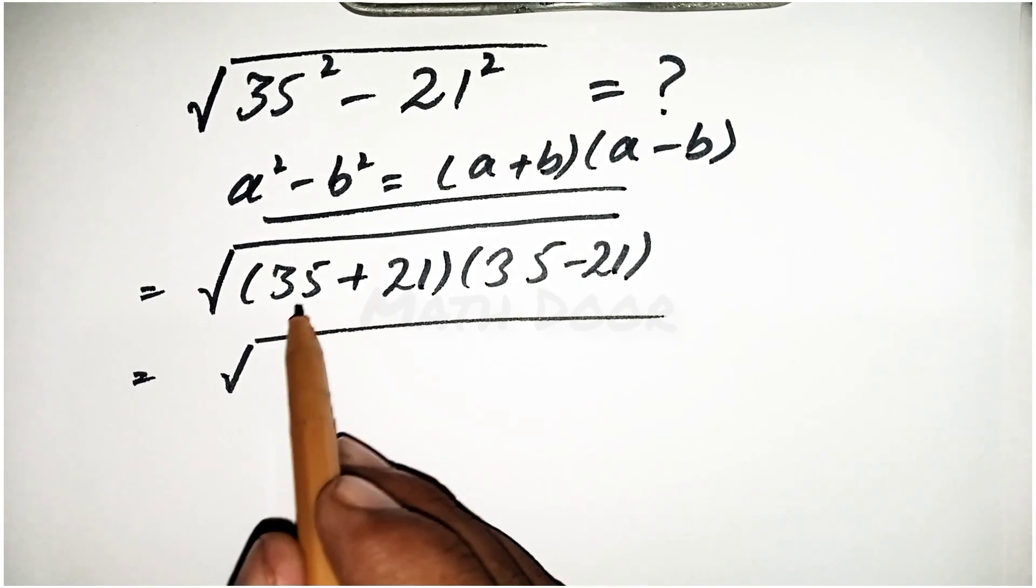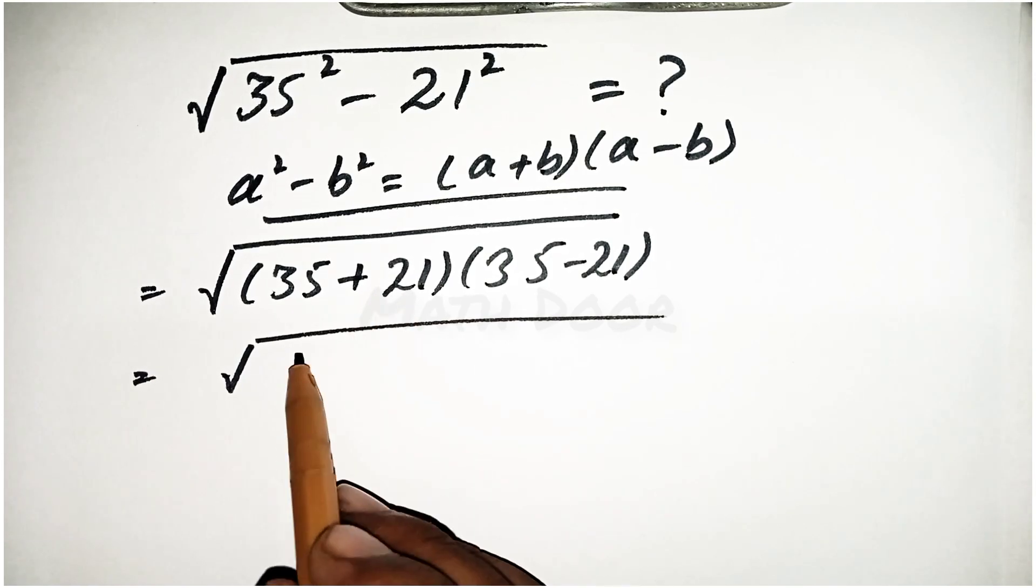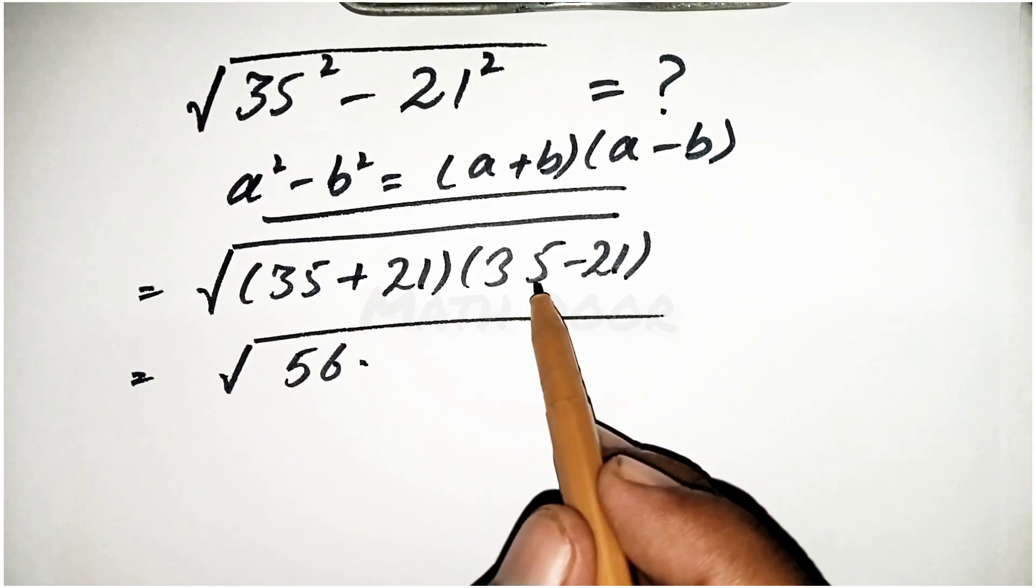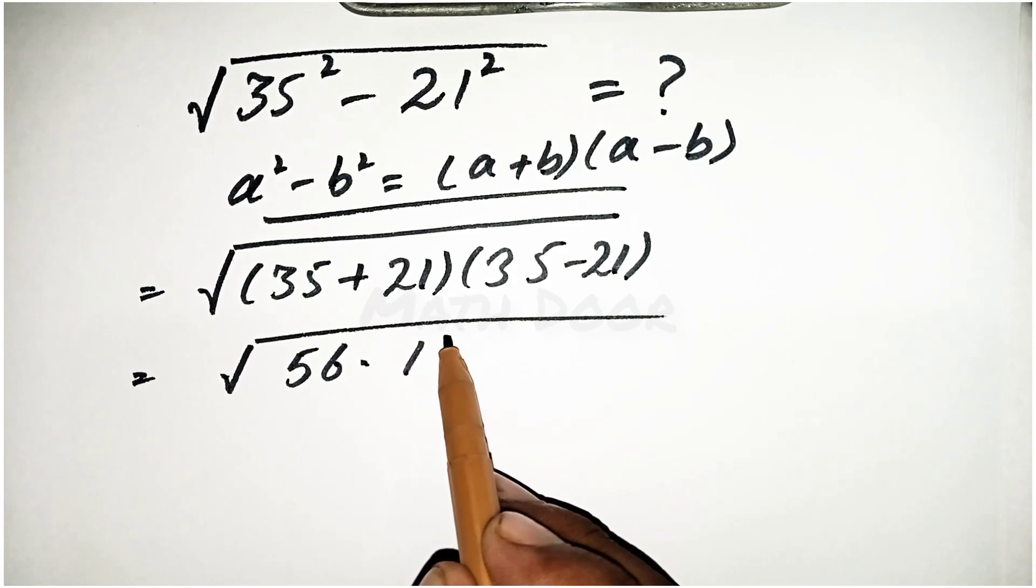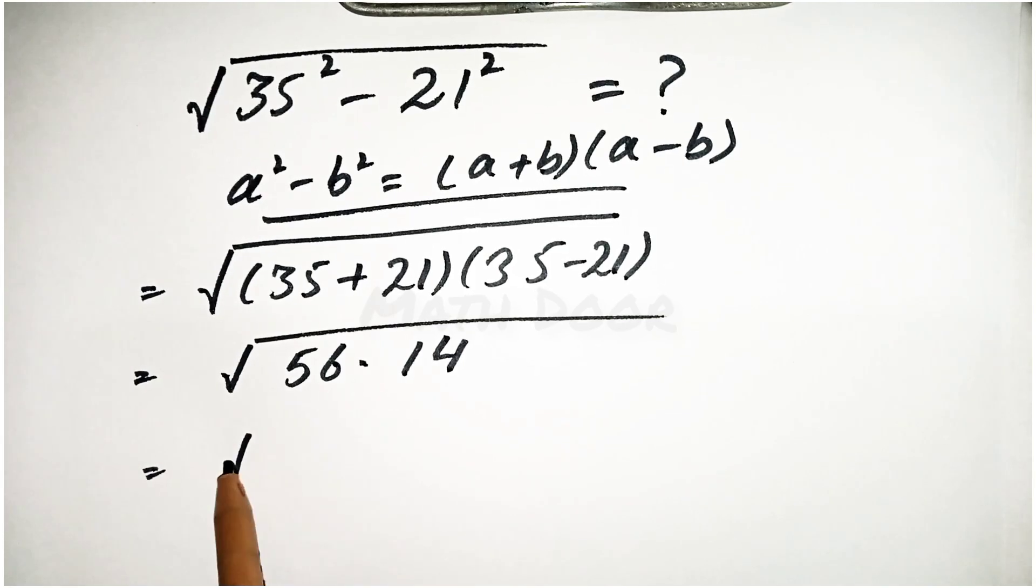Now, 35 plus 21 equals 56, and this will equal 14.